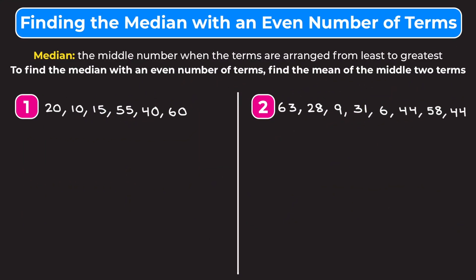In this video we're going to work through two examples of finding the median with an even number of terms. The median is the middle number when the terms are arranged from least to greatest. To find the median with an even number of terms, you have to find the mean of the middle two terms. I'll show you what this means once we work through these examples.